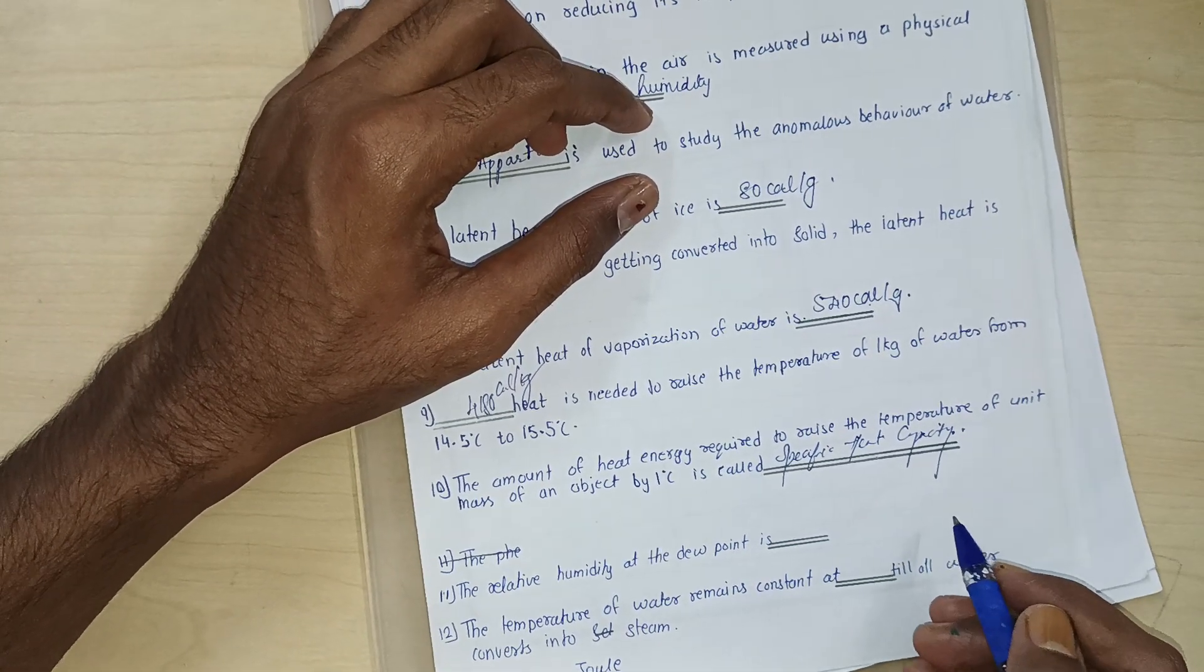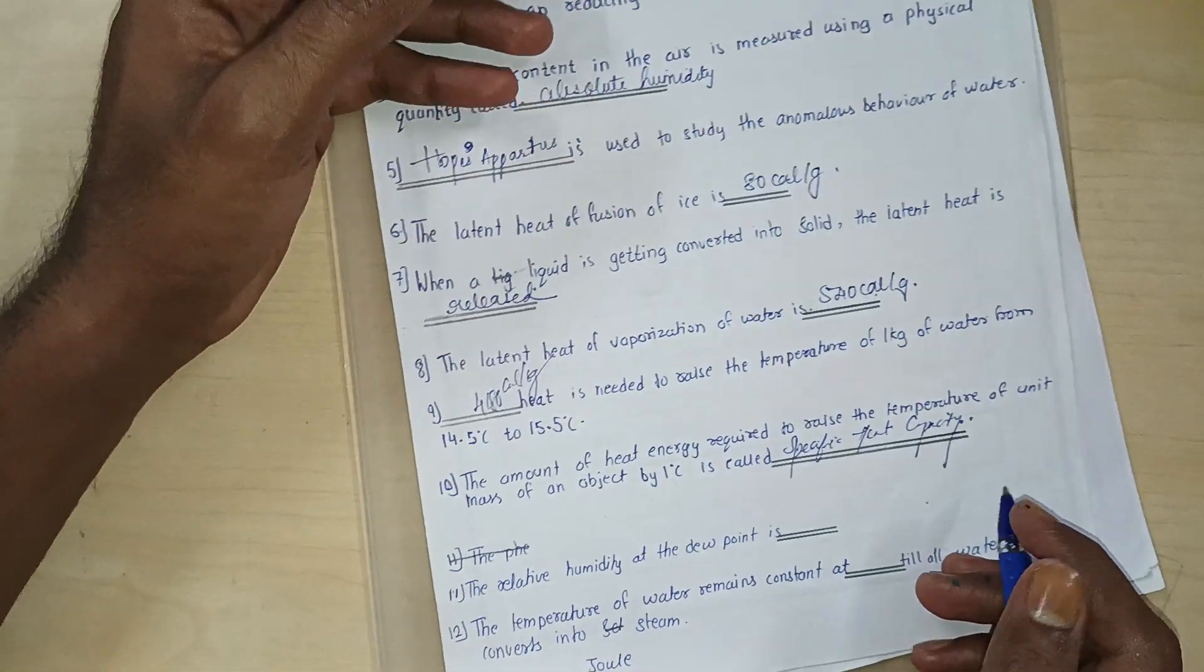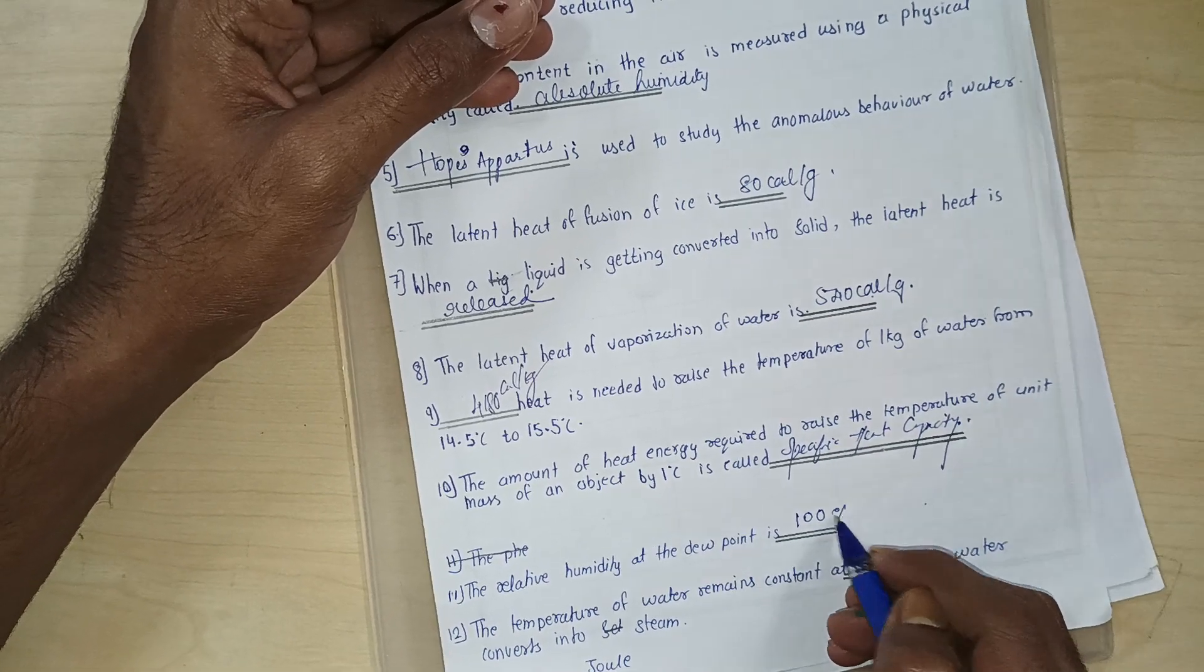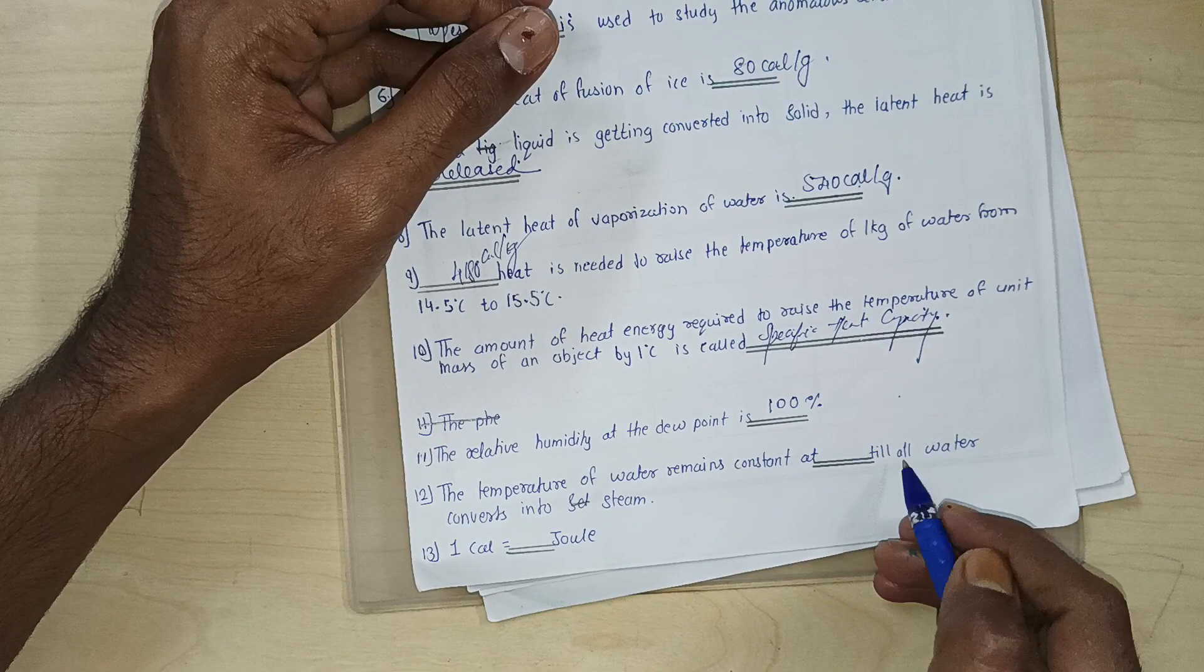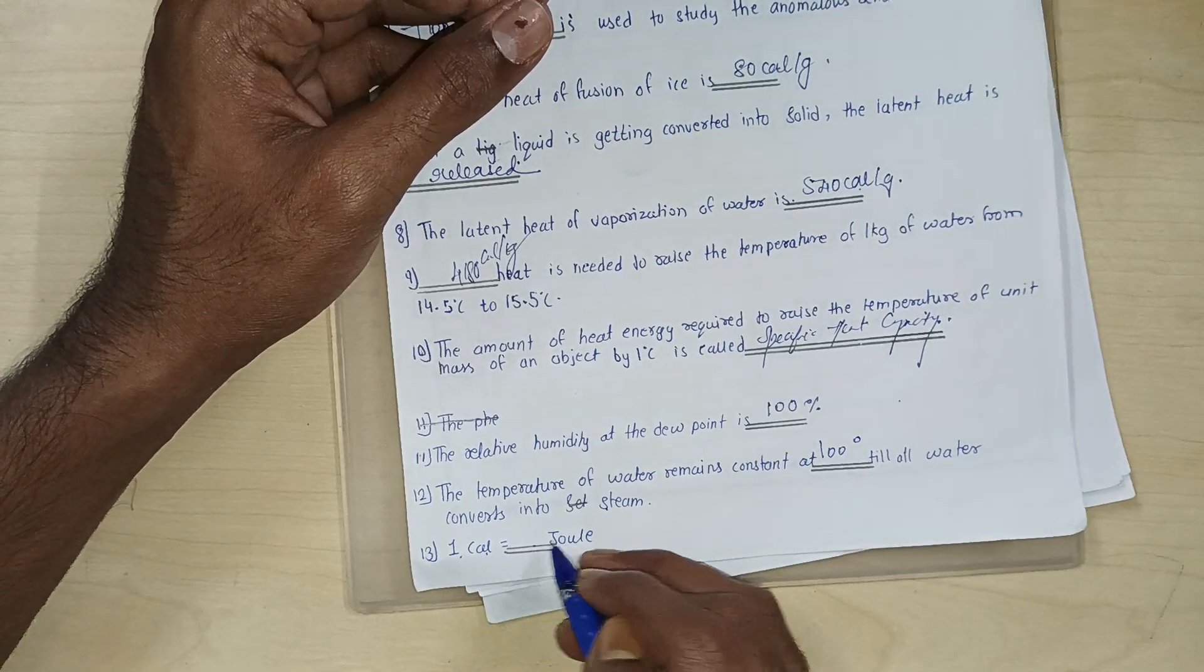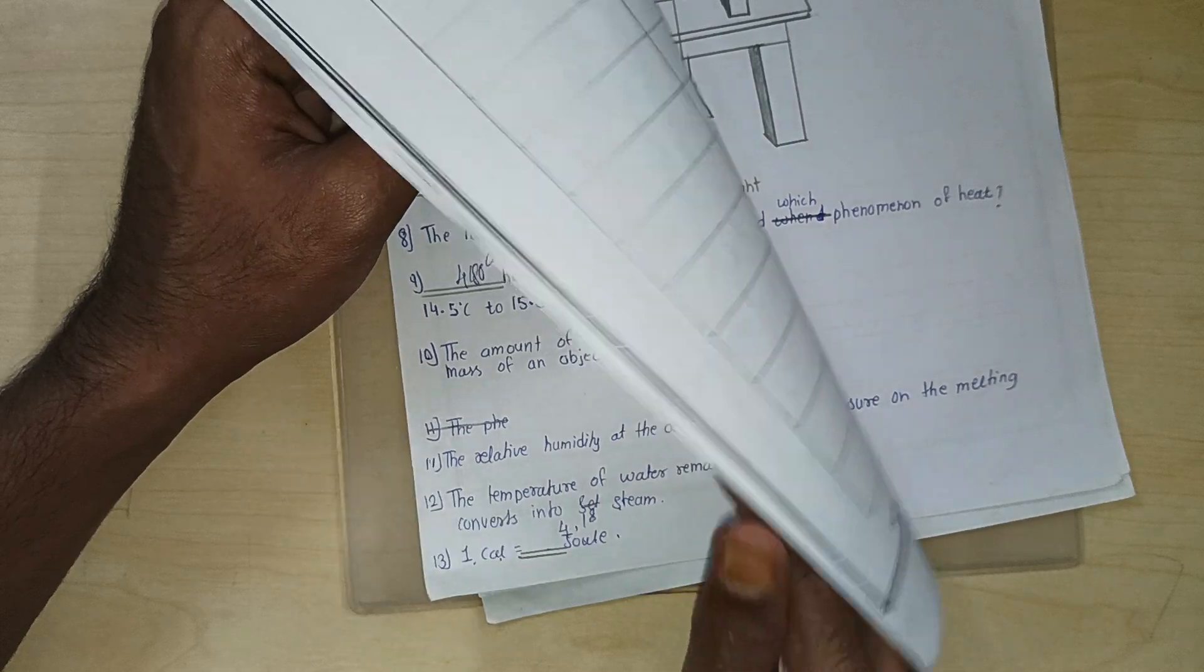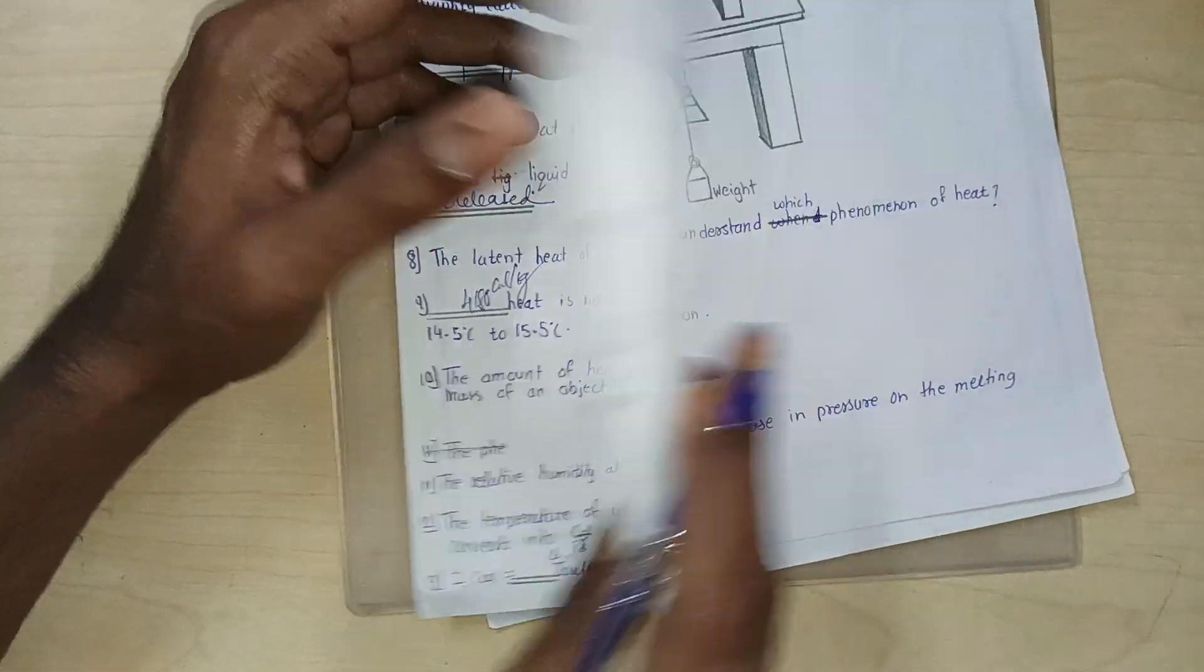The relative humidity of the dew point is how much? Is 100 percent. The temperature of water remains constant at dash till all the water converts into the steam. Till how much degree? 100 degree. One calorie is equal to dash joule. One calorie is equal to 4.18 joule.